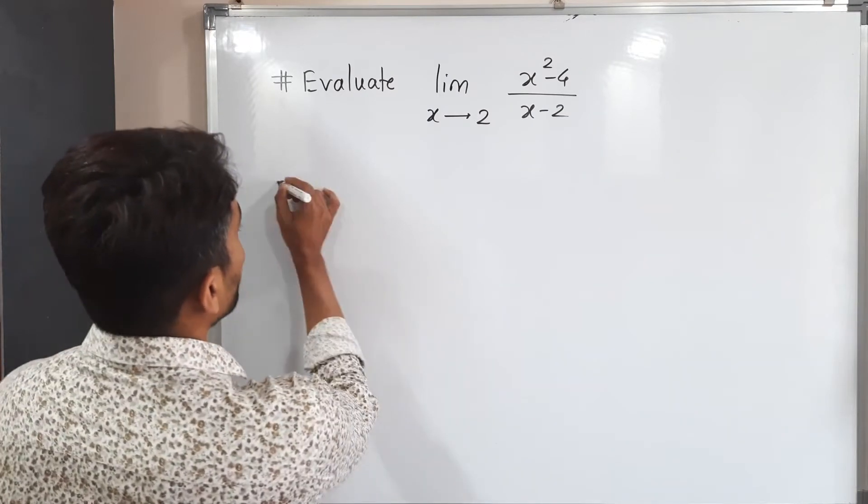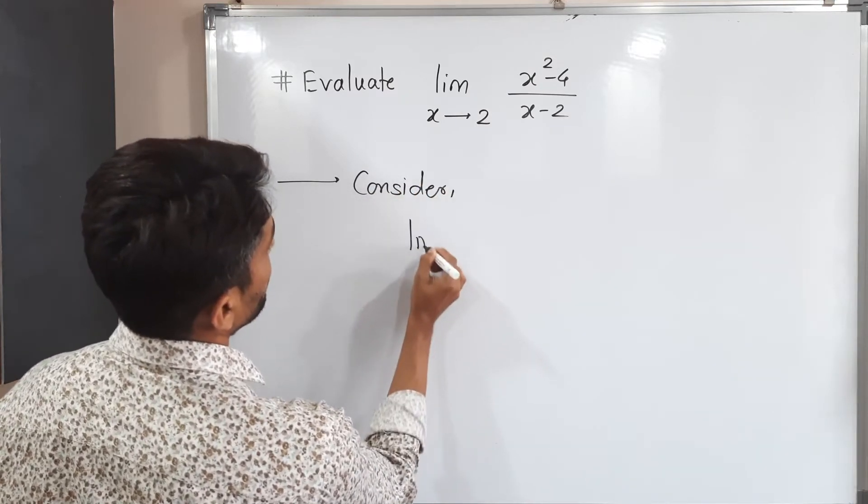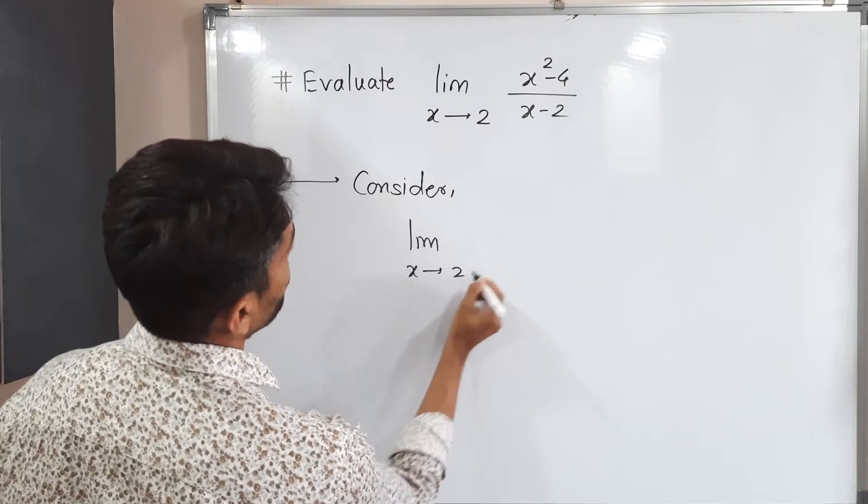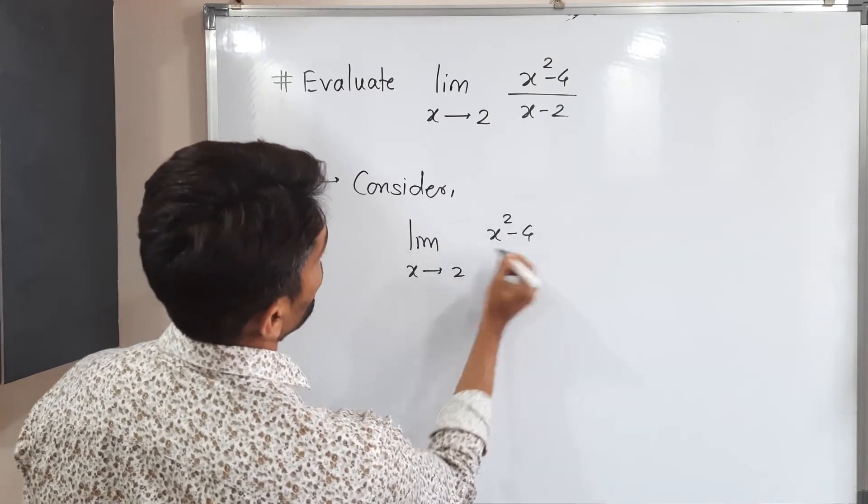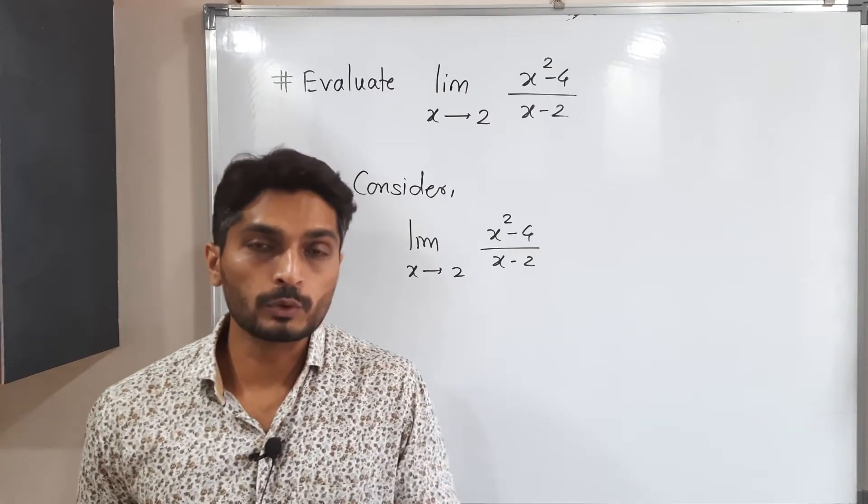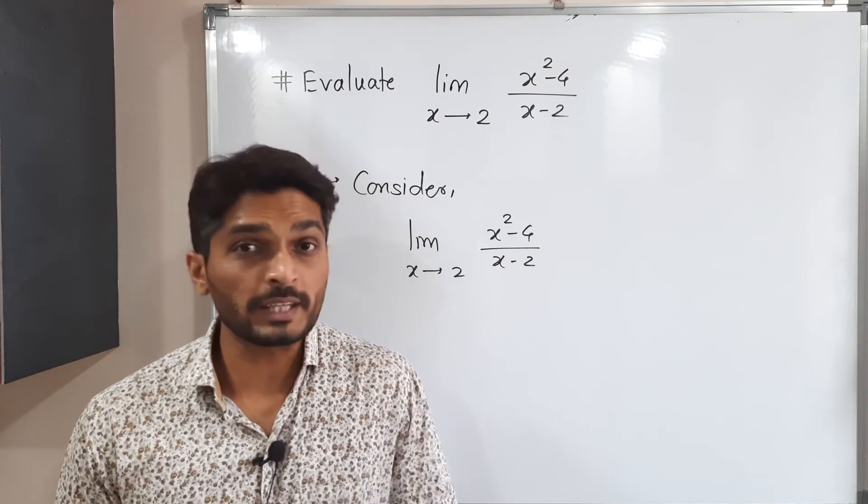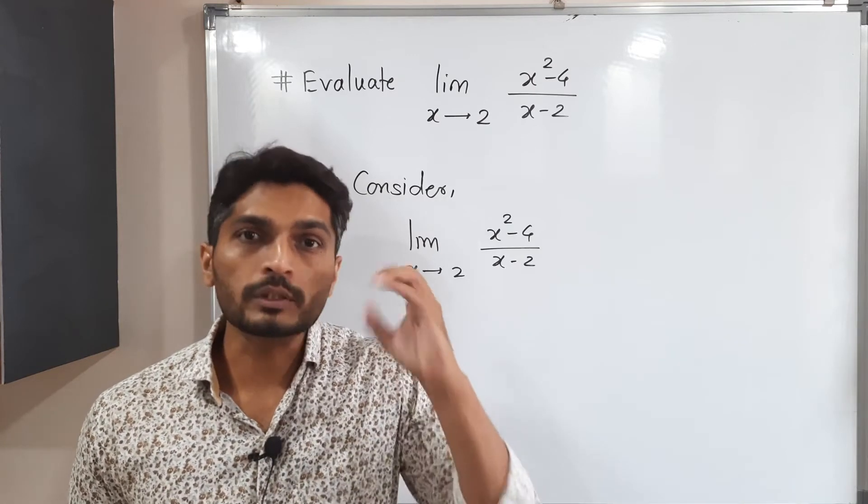What will I do? I will consider limit x tends to 2, x square minus 4 upon x minus 2. If I put directly x is equal to 2, we will have 0 at numerator as well as 0 at denominator. So we cannot put directly. We need to think over it.